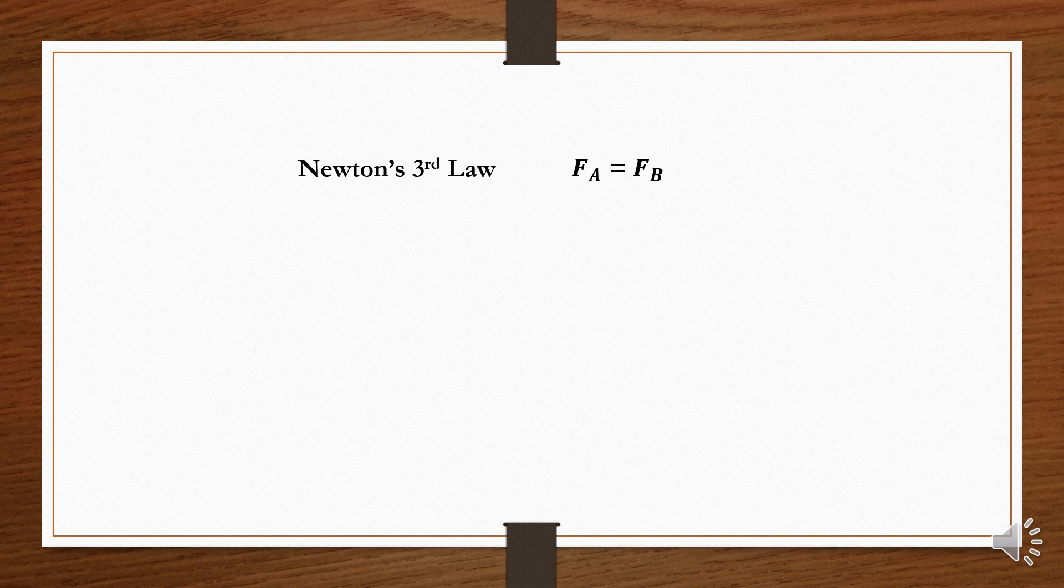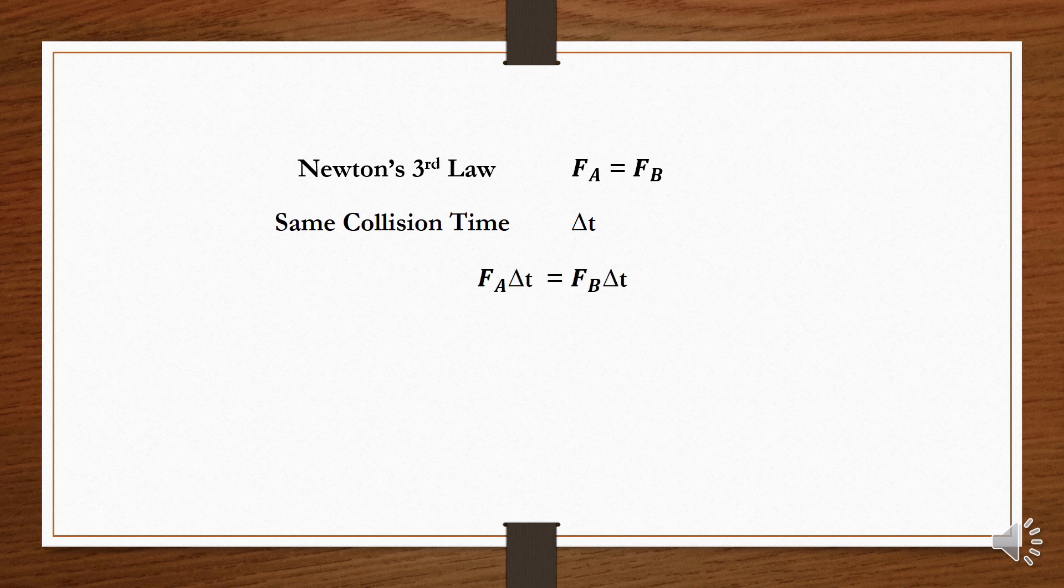We know that contact time between object A and B is the same with the contact time between object B and A. Thus, since they have the same collision time delta t, force A times delta t is equal to force B times delta t.